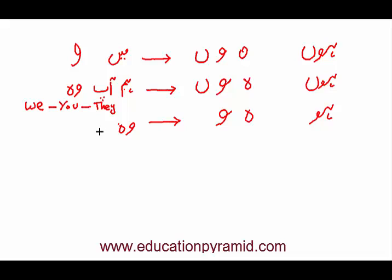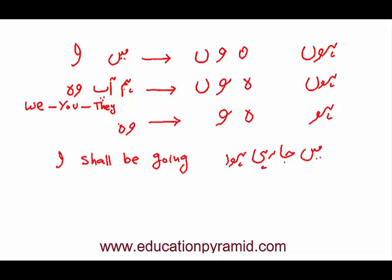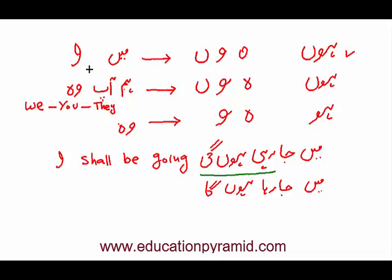We use 'wo' to mean 'they' (plural), and 'ho' with 'wo' meaning he or she (singular). For example, if saying 'I shall be going' for female: main ja rahi hum gi. For male: main ja raha hum ga. So main ja rahi hum gi is the female first-person future continuous form.